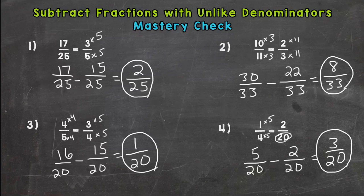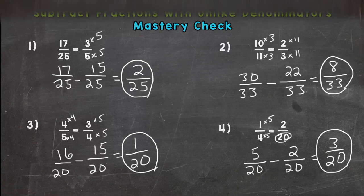Again, your goal was to have three out of four correct or all four correct, and that would show you that you have this down pretty well. If you were below that, hopefully you are seeing where you are making your mistakes because that is helpful too. That's the mastery check for subtracting fractions with unlike denominators. Thanks for watching.